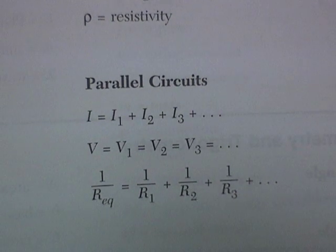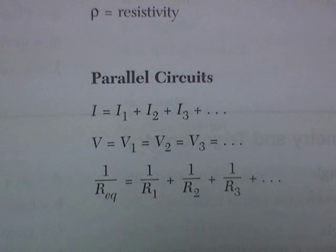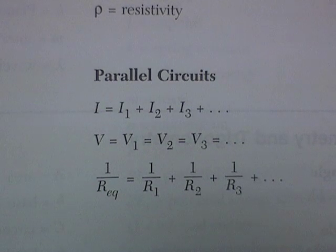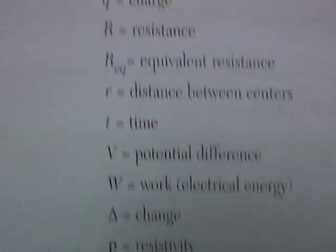And for parallel circuits, the equivalent resistance is 1 over R1 plus 1 over R2 plus 1 over R3. And we can certainly plug the numbers in and come up with the correct answer.